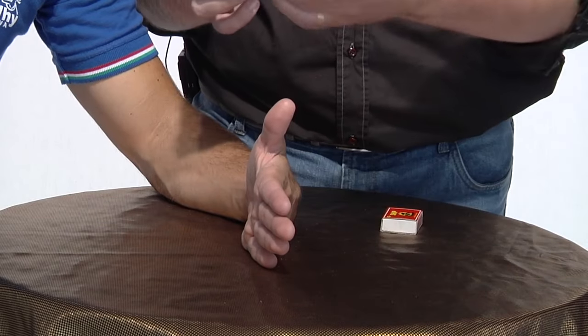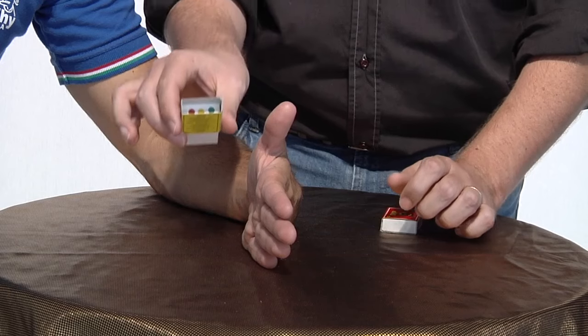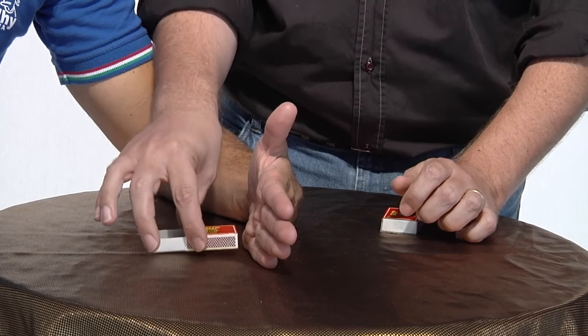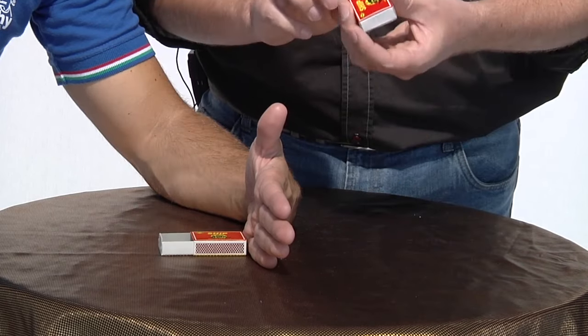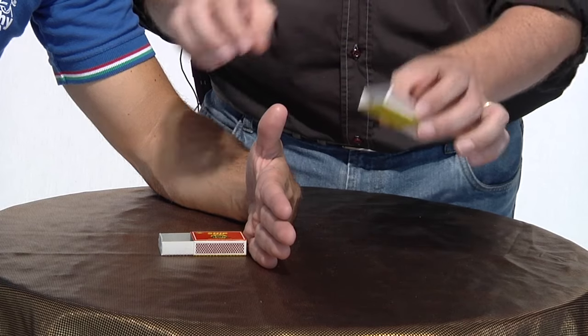Now we'll take the first matchbox, the matchbox with the dots. Here they are. I'll put it here on this side. And the second matchbox without the dots, I'll open up and put it here.